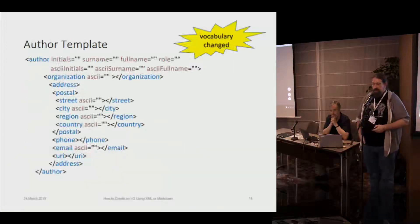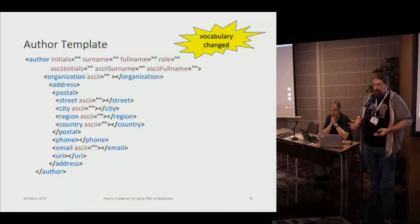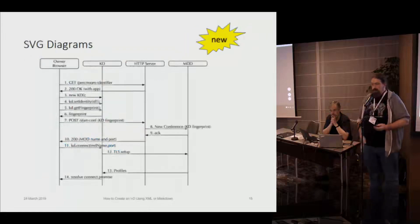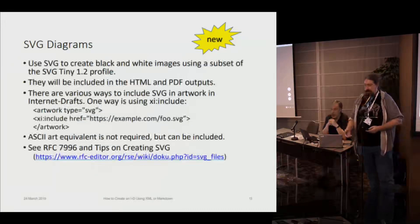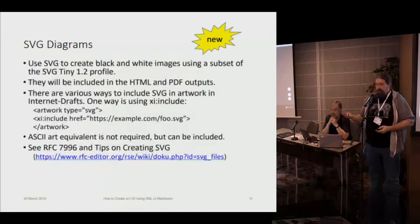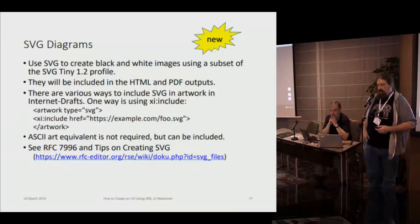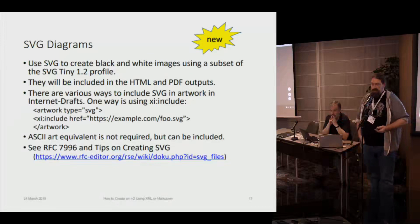Here's an updated author template. There's the normal value — surname plus full name — but with the new ASCII attributes, we put in the ASCII versions of whatever Unicode values you have. There's also support for SVG diagrams — here's one generated probably from something like PlantUML that can spit out SVGs. They need to be black and white images and a subset of the SVG Tiny profile. They will be included in your HTML and PDF. There's the X-include to actually put it into your internet draft source, and an ASCII equivalent — one will be generated if it's not there, but you can include it if you can get that formatted better.